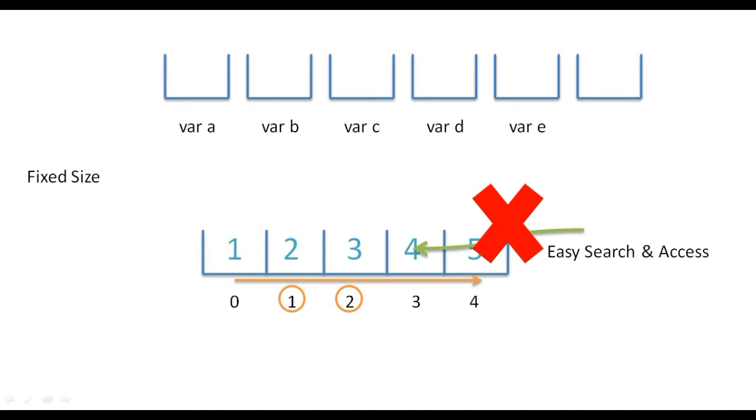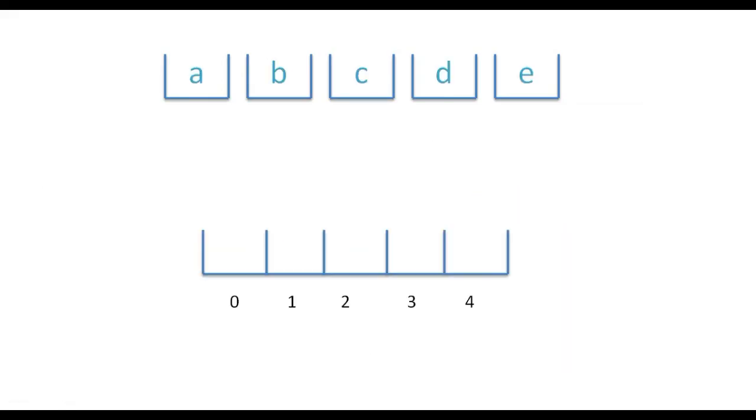Second thing is that array can only have similar data types. You cannot add characters in integer array. For example, if you have numbers from 1 to 5, this is an integer array - you cannot add character in this. You have to have a different array for characters.